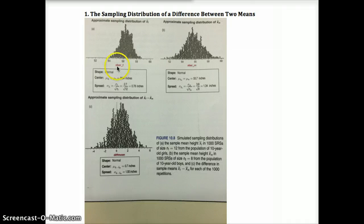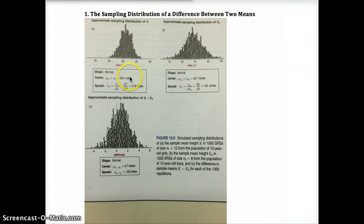Let's look at the mean. If we have an unbiased estimator, meaning the random condition is met, then the center, or the mean, should equal the true parameter mean. And that is the case in both of these, so it's also the case for the differences.